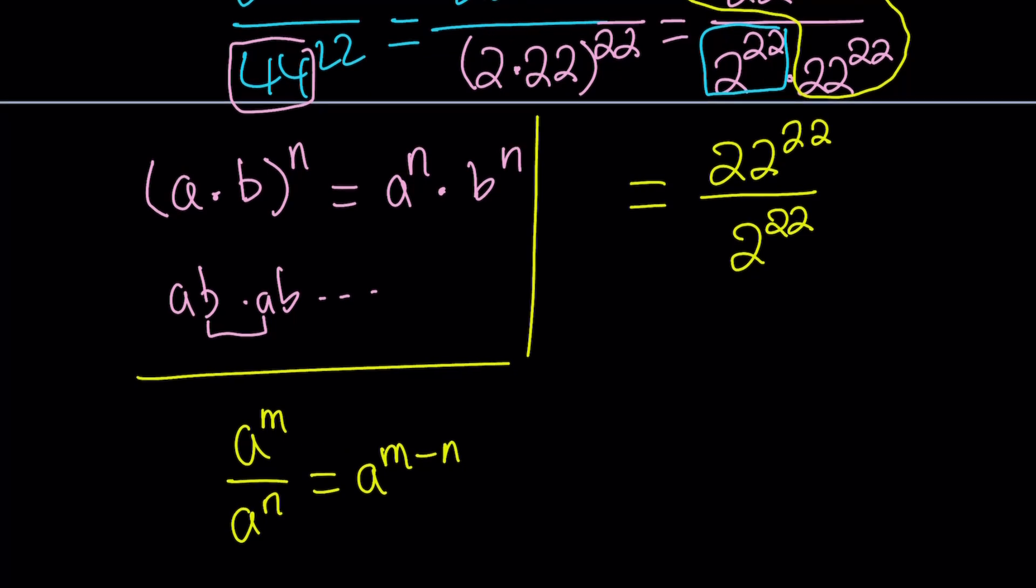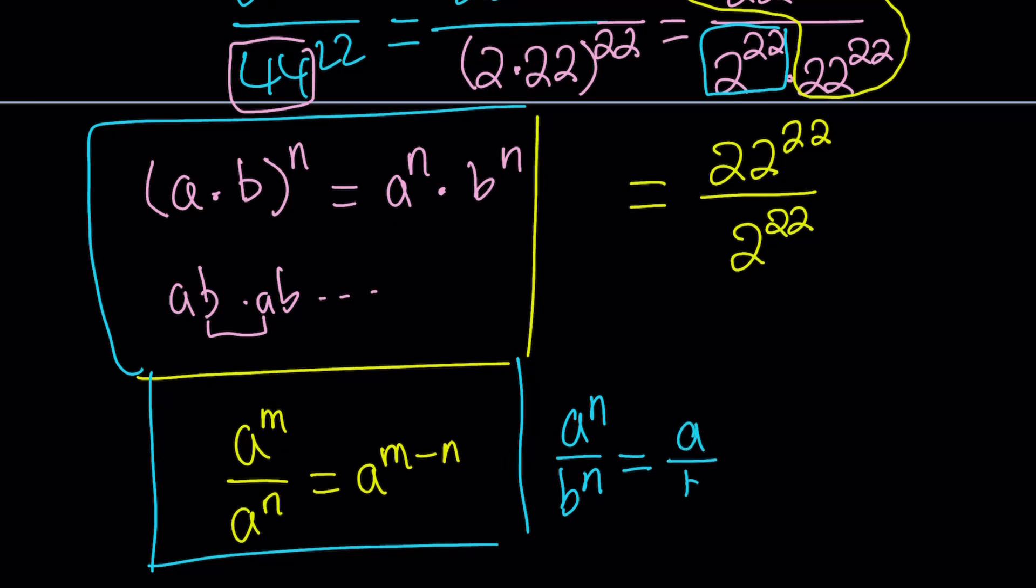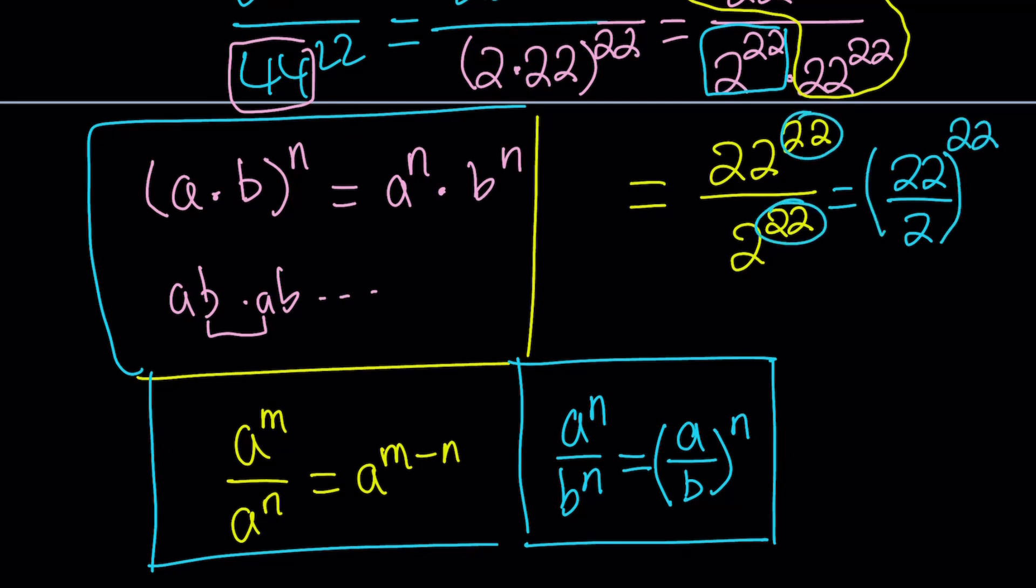If you're dividing two powers with the same base, we subtract the exponents. We're going to focus on the 22 terms and subtract. Another rule applies: if you divide a to the power n by b to the power n, you can write this as a over b to the power n. This can be written as 22 divided by 2, all to the power 22, which equals 11 to the power 22.